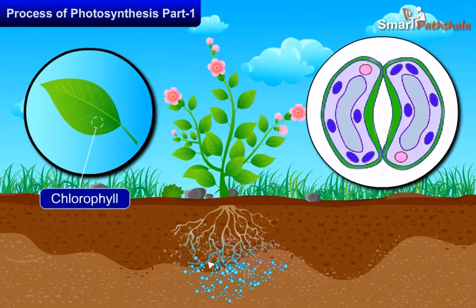Since the synthesis of food occurs in the presence of sunlight, it is called photosynthesis. Photo means light and synthesis means to combine.